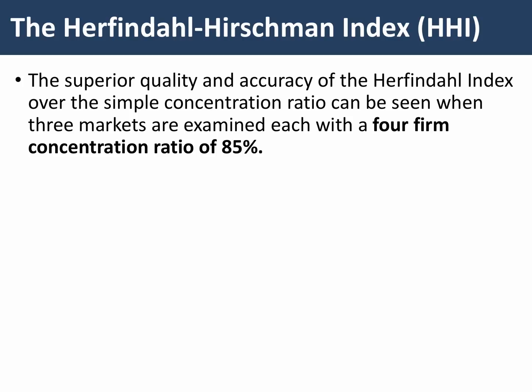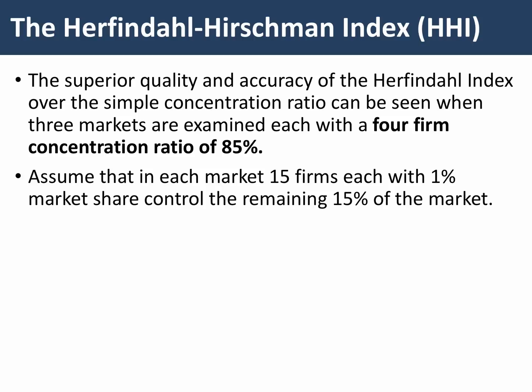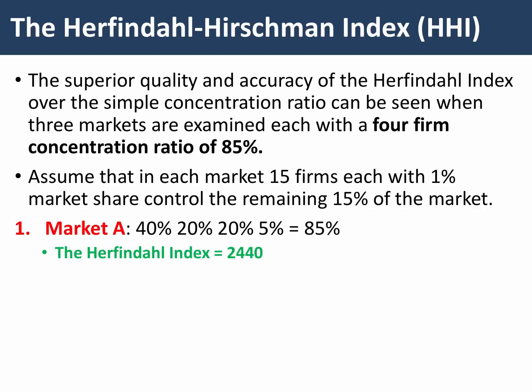The Herfindahl index is often regarded as a slightly more superior measure to the concentration ratio. The concentration ratio gives us a quick overview of market concentration, but consider a four-firm industry where the top four firms have 85% of the market — clearly an oligopoly. In Market A, those firms have shares of 40, 20, 20, and 5, with 15 remaining firms each at 1%. The Herfindahl index comes to 2,440.